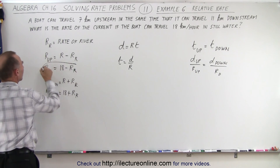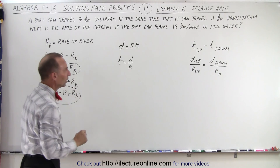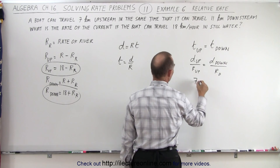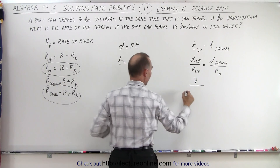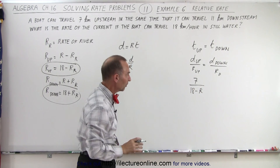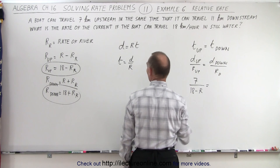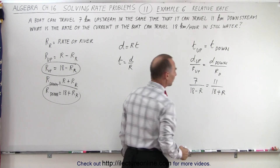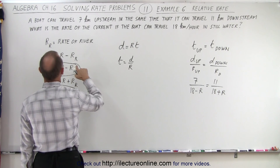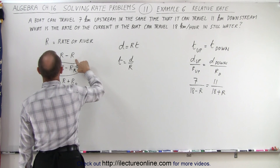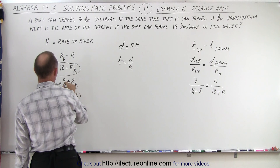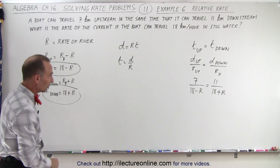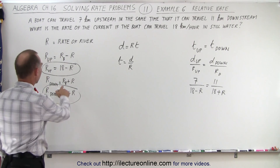Let's go ahead and plug those in, as well as the distances. We'll just call it r for the rate of the river — that makes it easier. So the equation becomes 7 divided by (18 minus r) equals 11 divided by (18 plus r). Let's get rid of all the sub-r notation to keep it cleaner — we'll just call it r for the rate of the river.